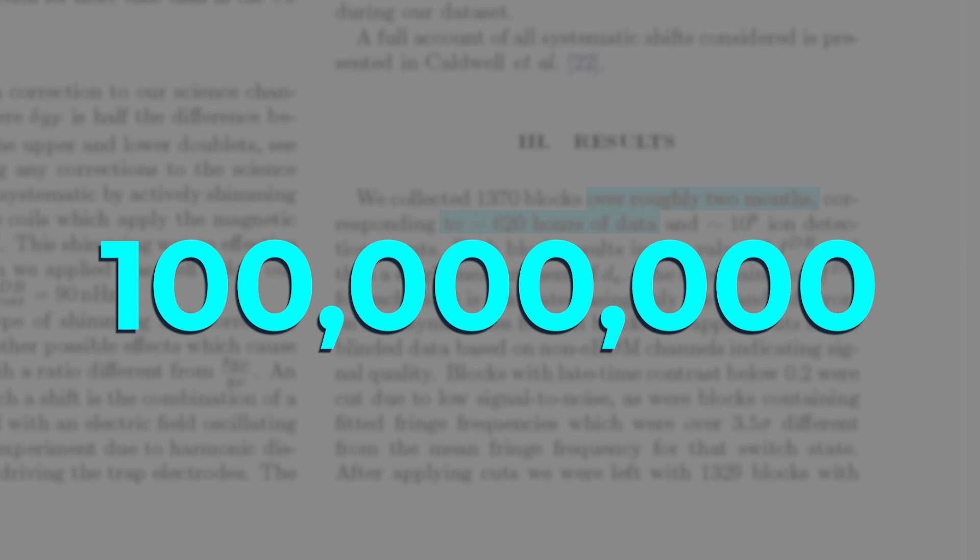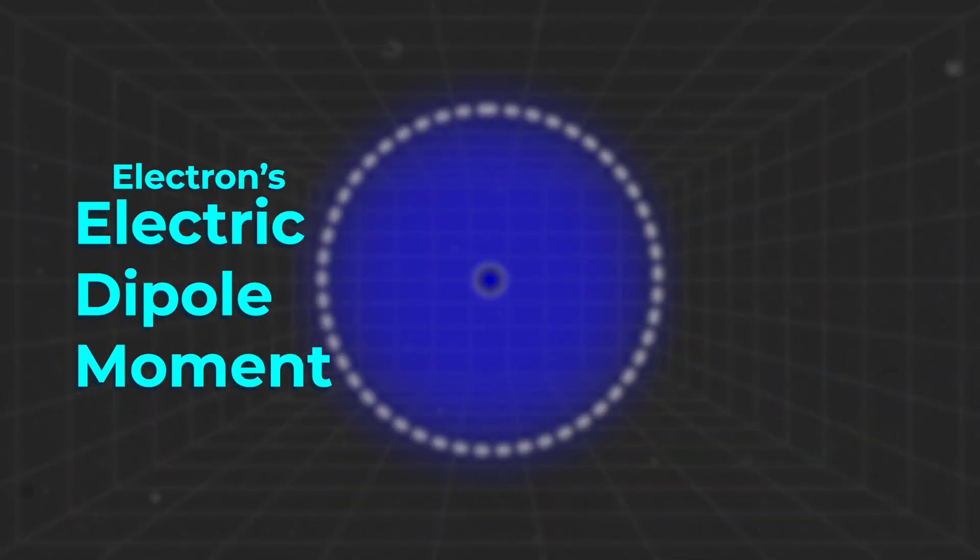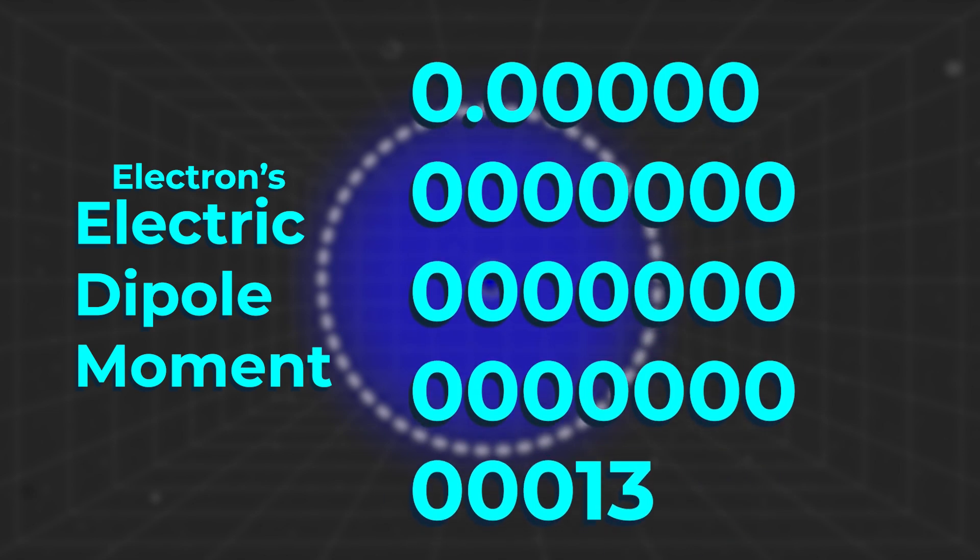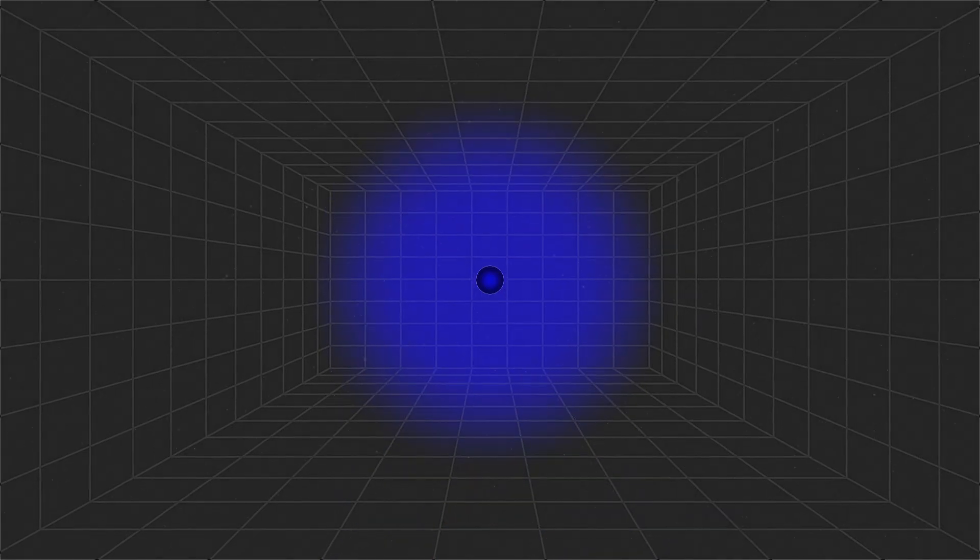After collecting 620 hours of data over about two months, corresponding to 100 million detection events, they obtained a value for the electron's electric dipole moment of 1 times 10 to the minus 30. That's 30 zeros, then a 1 at the end, which they say is consistent with zero to within one standard error.